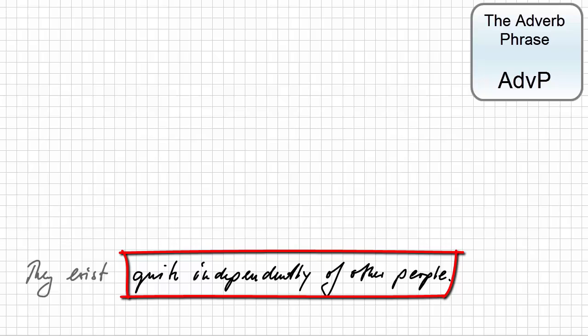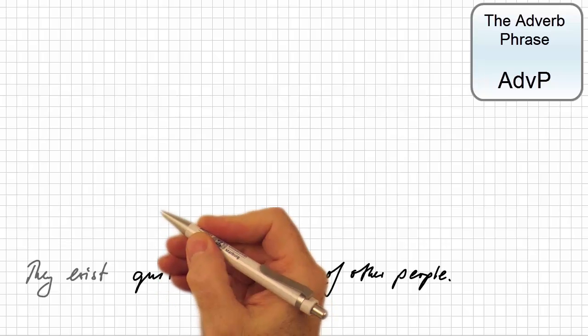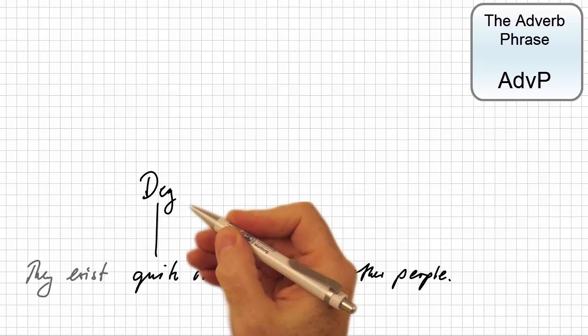To understand its internal structure, let's build it step by step. Clearly, quite is a degree adverb which modifies the adverb independently.